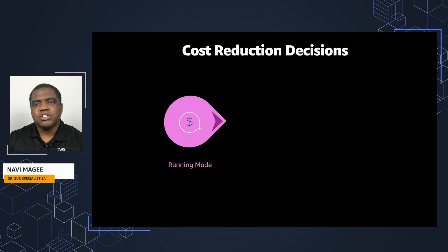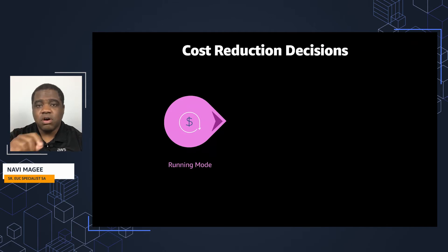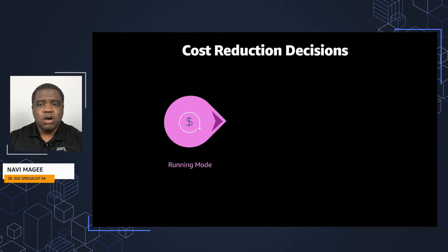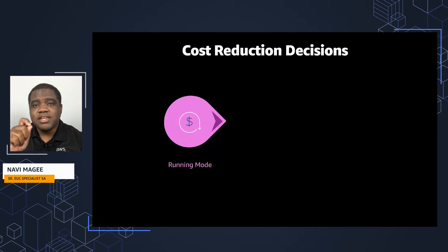When we look at cost reduction, there are three key things to keep in mind. The first one is running mode, and this should be one of the key considerations. Within AppStream, there are two running modes available: always on and on demand. Always on runs in a 24/7 state and there's an hourly charge incurred per instance. This charge is there even if the user is not actively streaming the instance.